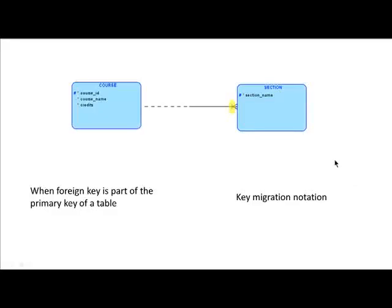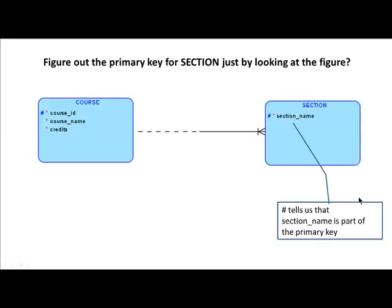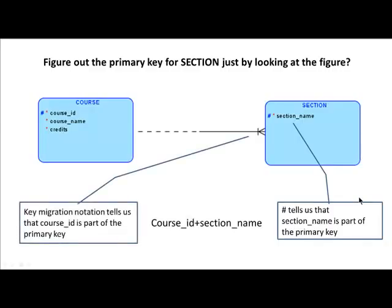When the foreign key of a particular table is also part of its primary key, we use the key migration notation as shown here. If you are given just this entity relationship diagram and asked to find the primary key for the section table, you can clearly see that because of the hash sign, section name is at least part of the primary key. Because of the key migration notation, course ID is also implicitly part of the primary key. Therefore, the primary key is the combination of course ID and section name.